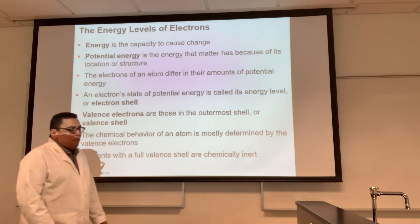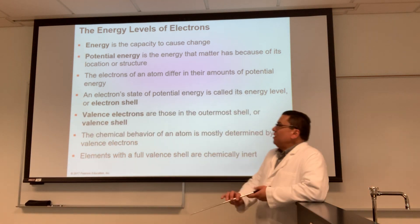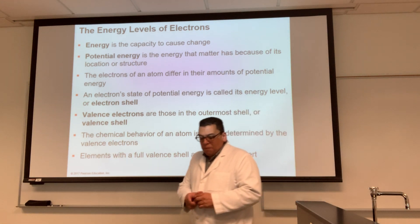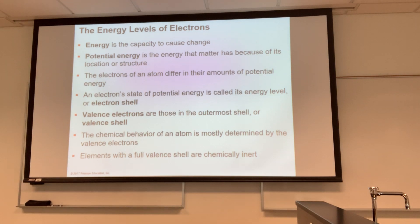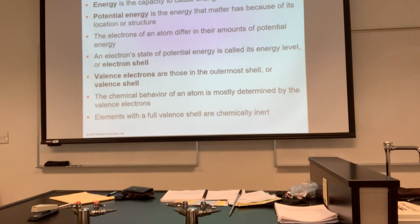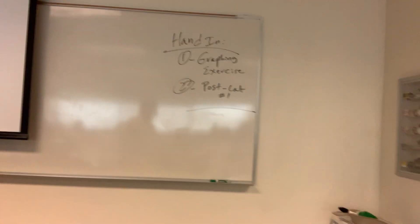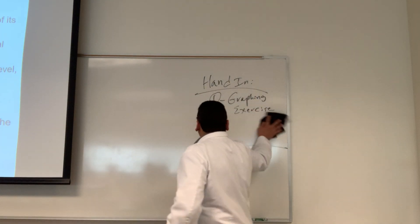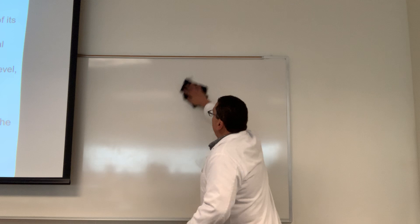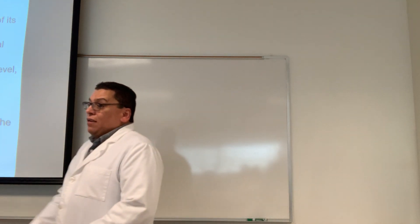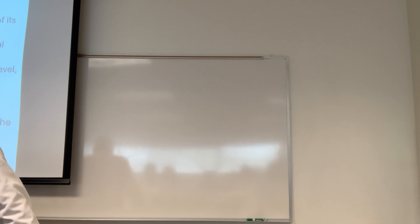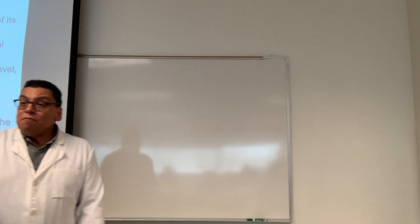The next topic in chemistry is something called the valence shell. Let me show you what carbon looks like on the board. Carbon has six electrons. The interesting thing about electrons inside carbon and all elements is this: they hate each other, because they're all negatively charged — they can't come near each other.